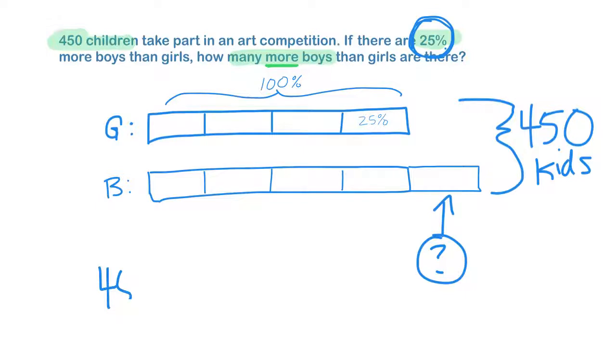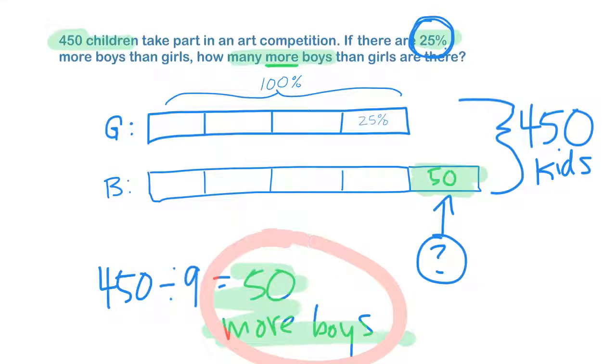So 450 children divided by nine blocks equals 50 per block or 50 more boys. Every block is 50, and our answer then means that this block, this more boys, is 50. So there are 50 more boys than girls in the competition.